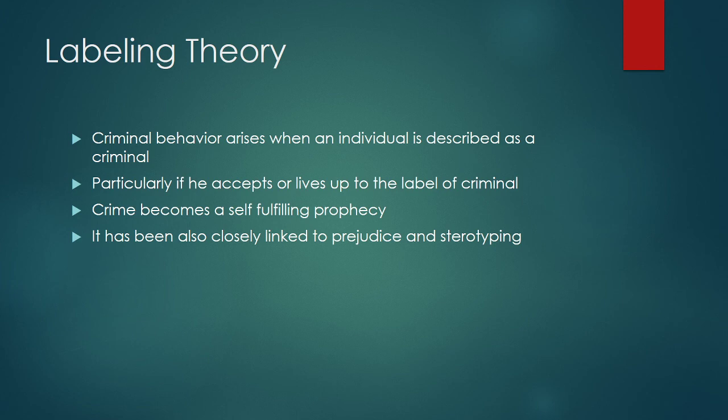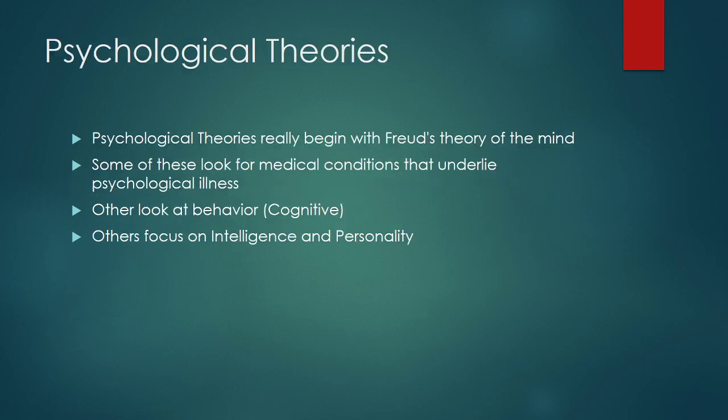Labeling theory is a very popular one. This is the idea that people become criminals because we call them criminals. If we start to describe someone as a criminal or their behavior as criminal, they will live up to that label, and crime becomes a self-fulfilling prophecy. This has been closely linked to things like prejudice and stereotyping, and it seems to have a fair amount of scientific support.